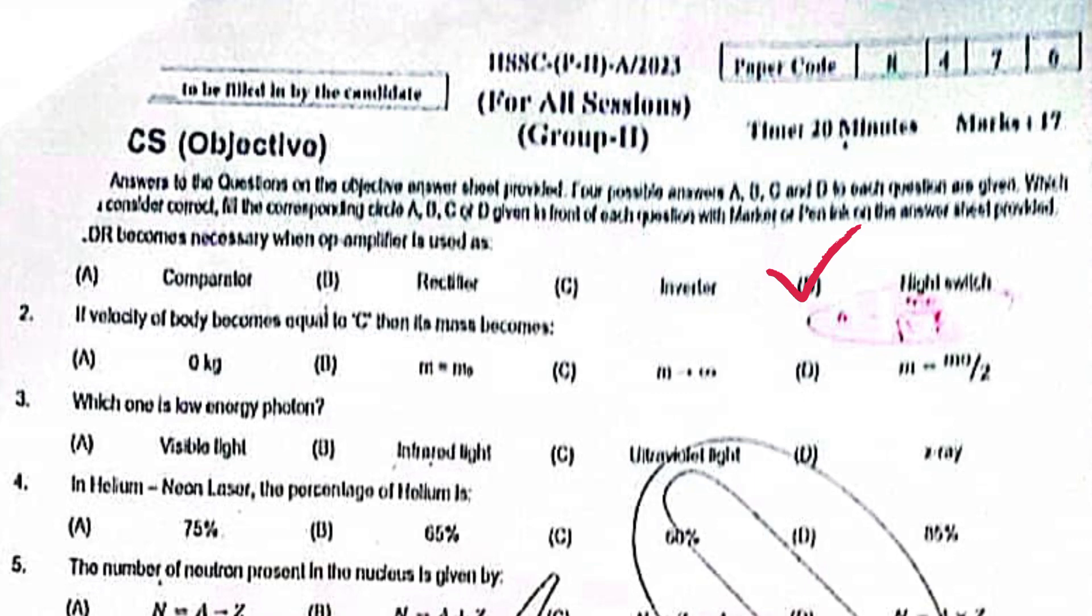night switch. If velocity of body becomes equal to C, then its mass must become M equal to infinite, which one is low